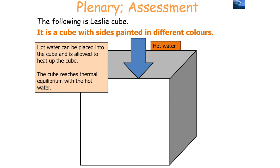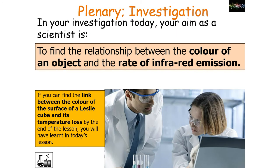Hot water can be placed into the cube and is allowed to heat the cube up. The cube reaches thermal equilibrium with the hot water and then emits radiation due to its high temperature. In this investigation we're going to find the relationship between the colour of the surface of the Leslie cube and the rate of infrared radiation, which we can measure by its temperature loss from the start of the investigation.